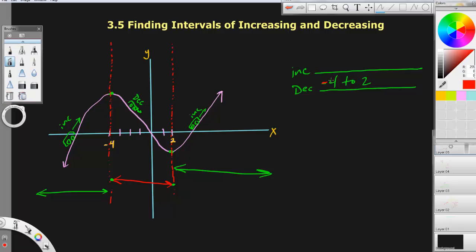In fact, I'll just outline that in red. Increasing would be this negative infinity barrier out here, even though it's not really a barrier, up to negative 4. That would be an interval of increasing negative infinity to negative 4.